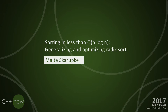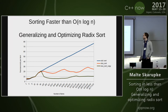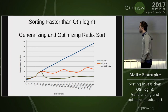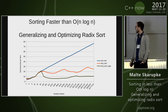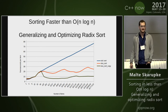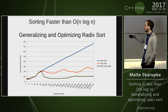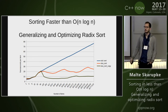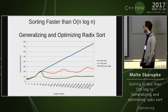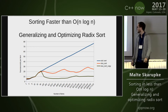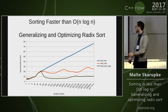Welcome to my talk, 'Sorting Faster Than N Log N: Generalizing and Optimizing Radix Sort.' I've started you off with a graph showing a benchmark—I'll talk more about benchmarks at the end. You can see the punchline right away: the Radix Sort algorithms can be easily twice as fast or more than Standard Sort. Today we'll be talking about the line in the middle, Skar Sort, the red line.